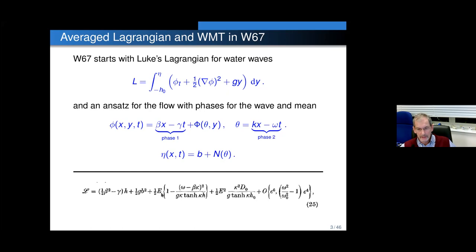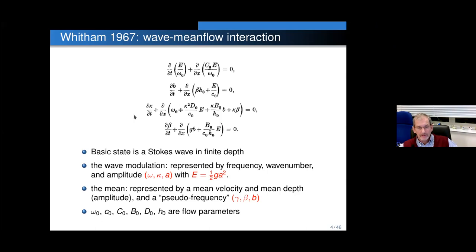Think about this as just some algebraic and transcendental function of six parameters: you have the two amplitudes B and A, and the frequencies, pseudo frequencies, wave number, and pseudo wave number. We have a basic state which is the Stokes wave, and we want to look at a perturbation of that. Perturbation theory from the Whitham point of view says you derive equations for the frequency, wave number, and amplitude of the wave, and if we have a mean, then you derive equations for the mean velocity, mean depth, and pseudo frequency.